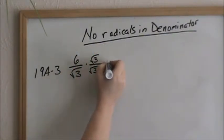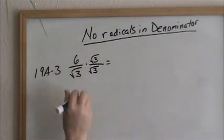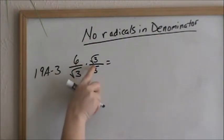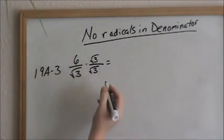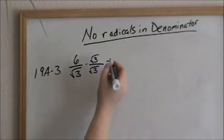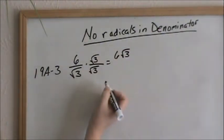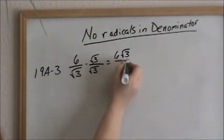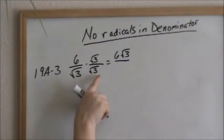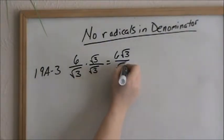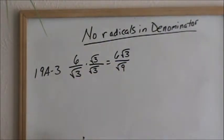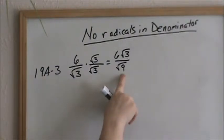So, multiplying fractions, you just multiply across. 6 times square root of 3 — remember, it is numbers to numbers, radicals to radicals. So this just becomes 6 square root of 3. Square root of 3 times square root of 3 is square root of 9. Now, we simplify radicals. Always simplify radicals because the square root of 9 is 3.